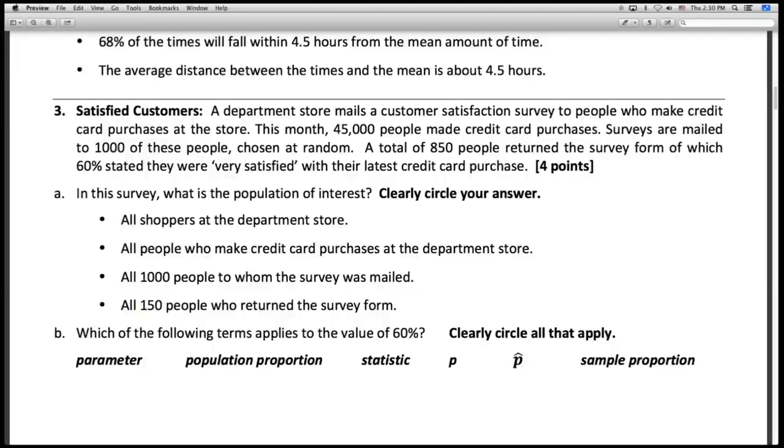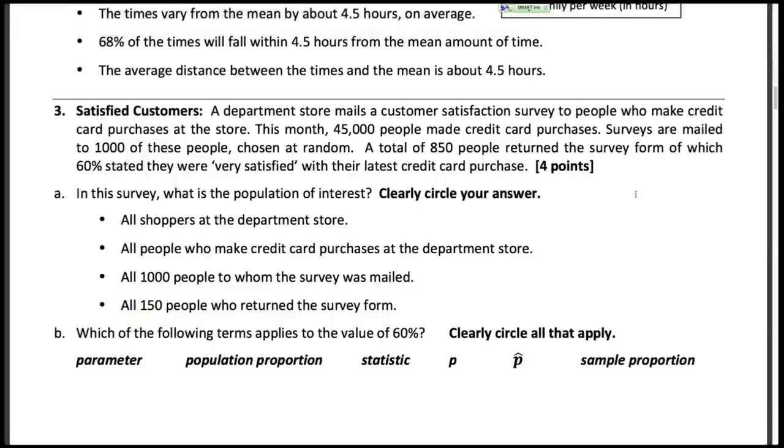So a department store mails a customer satisfaction survey to people who make credit card purchases at the store. 45,000 people made credit card purchases in this month. And these surveys are mailed out to 1,000 of these people chosen at random. 850 people returned the survey form, and then 60% of those people were very satisfied with their latest credit card purchase.